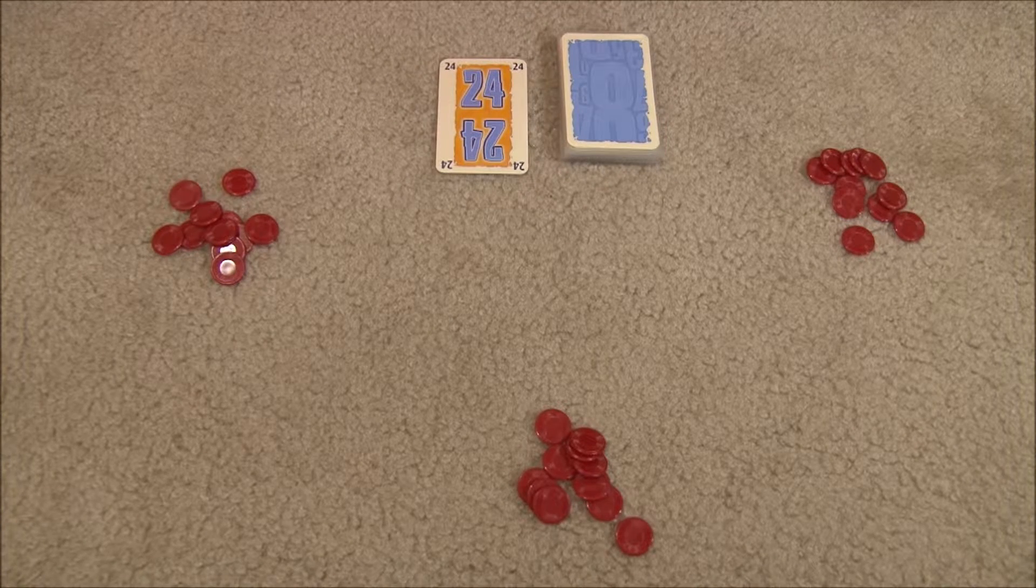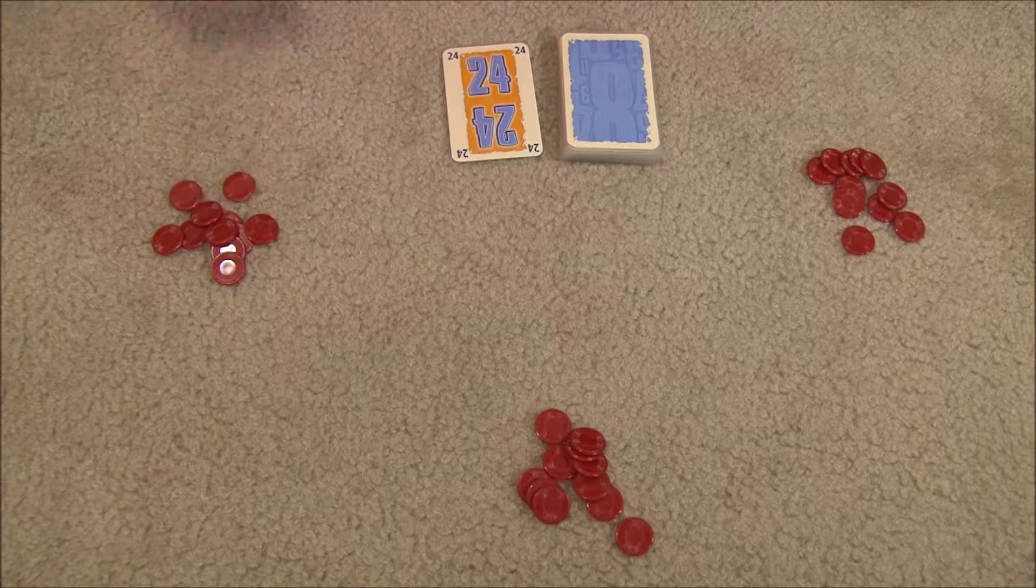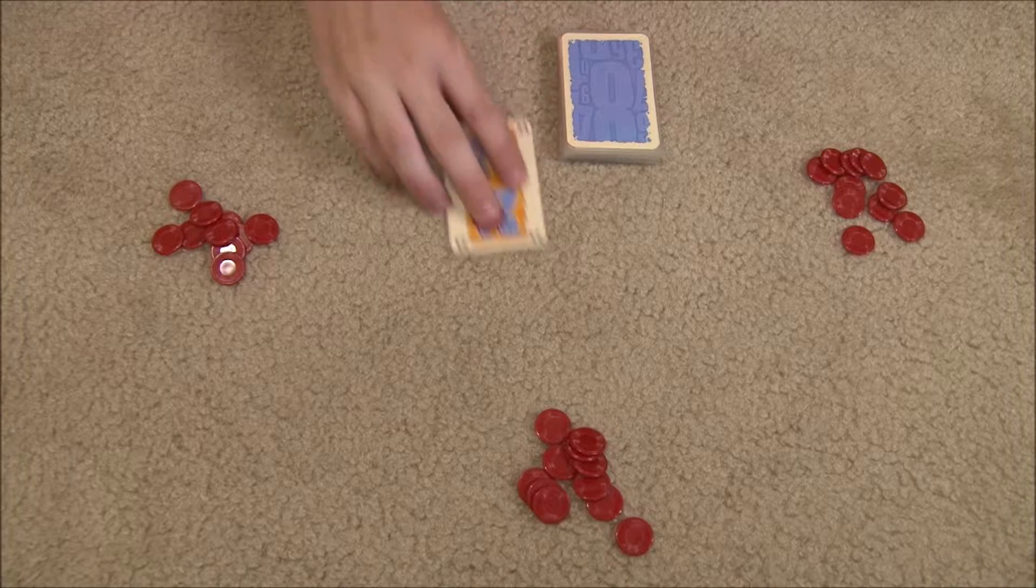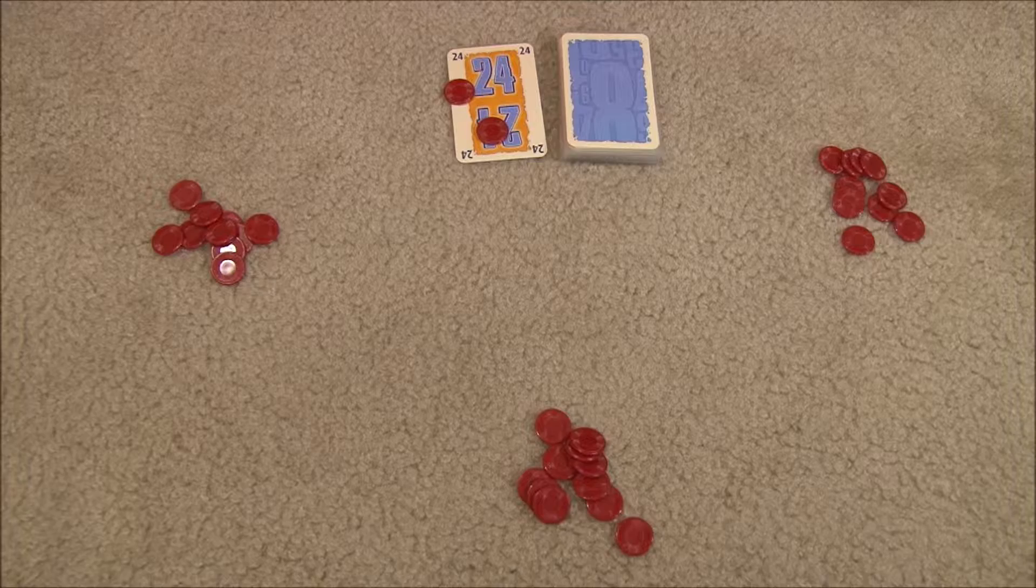Players take turns in clockwise order, and on a player's turn, he either takes the face-up card and puts it in front of him, or he puts a chip on it. If you choose to put a chip on it, it's the next player's turn and he's faced with the same decision. He either takes the card and all chips on it, or puts another chip on it. It goes around clockwise until somebody takes that card.